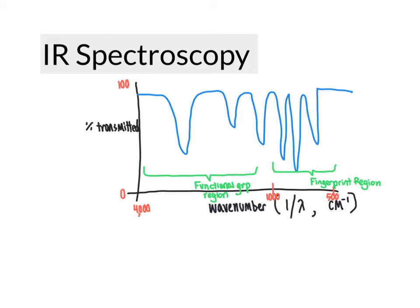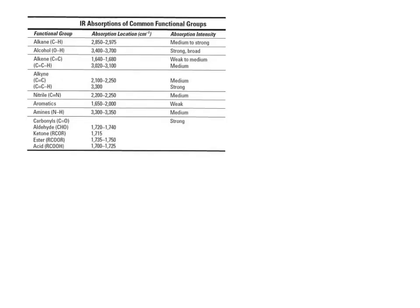Thinking about what regions of the spectrum particular functional groups will absorb in, we can take a look at a chart of well-known values for the expected range in which different functional groups occur within the IR spectrum. The functional group is listed in the left column, middle column is the absorption location in inverse centimeters, and we have some hints about what to expect in terms of absorption intensity.